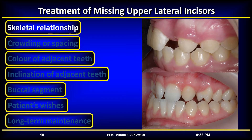The first factor is the skeletal relationship. Space closure by incisor retraction may be preferred in Class 2 Division 1 cases as it aids in overjet reduction, but this is unfavorable in Class 3 malocclusion, where opening the space is indicated as it will push the upper incisors forward and correct the overjet.